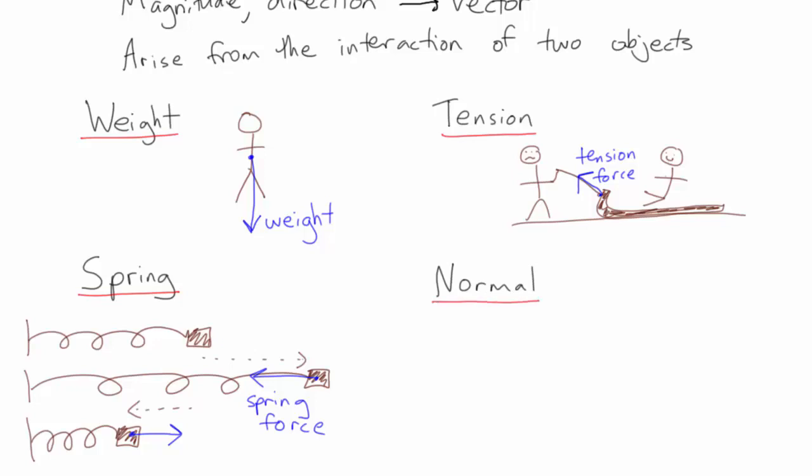The normal force is an incredibly common force, which is all around us. It's why we think of objects as solid, and the reason why you don't fall through the floor. It might seem like a strange name, but the word normal comes from maths, meaning perpendicular to a surface.